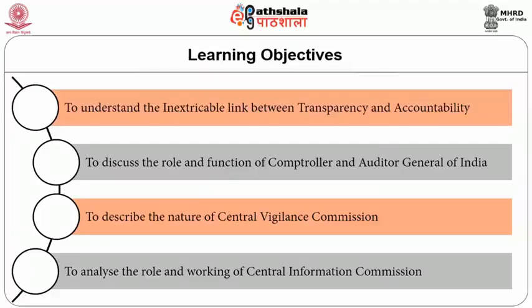Three such important institutions are the Central Vigilance Commission, the Comptroller and Auditor General of India, and the Central Information Commission, which work relentlessly to ensure simple, moral, accountable, responsive and transparent administration in India. In this module, we are going to discuss these three august institutions and how they function to ensure transparent administration and effective service delivery to the masses. The objectives of the module are to understand the inextricable link between transparency and accountability, to discuss the role and functions of the Comptroller and Auditor General of India, to describe the nature of the Central Vigilance Commission, and to analyze the role and working of the Central Information Commission.